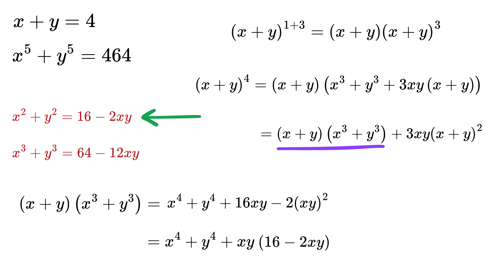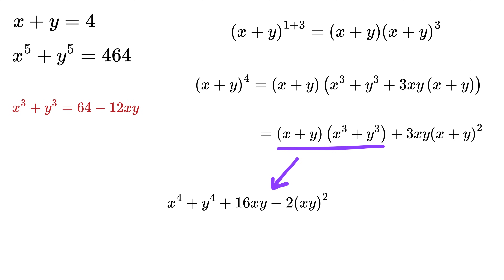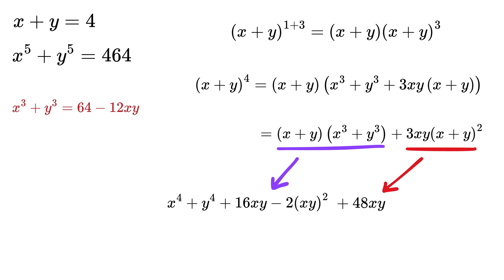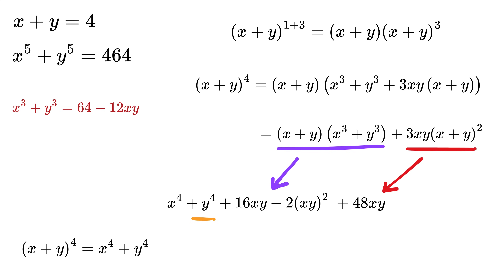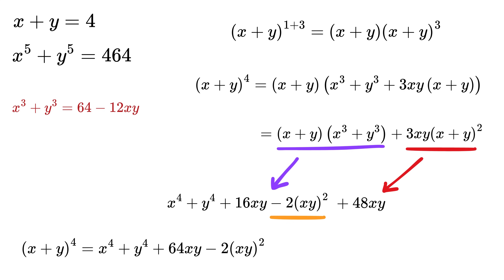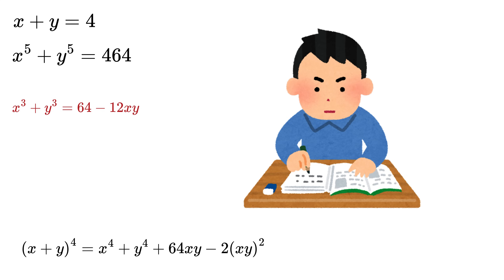We also have the term 3xy times (x+y)², which becomes 3xy times 16, giving 48xy. So (x+y)⁴ equals x⁴ plus y⁴ plus 16xy minus 2(xy)² plus 48xy, combining to give x⁴ plus y⁴ plus 64xy minus 2(xy)².